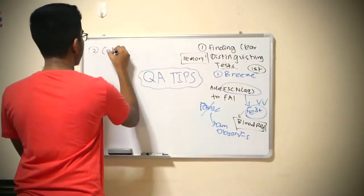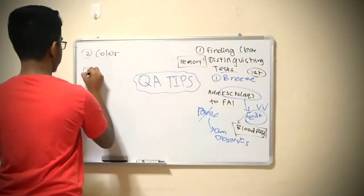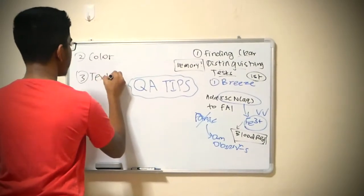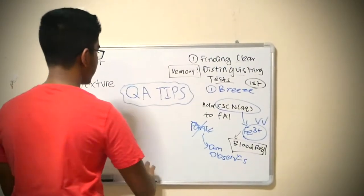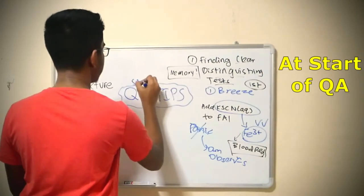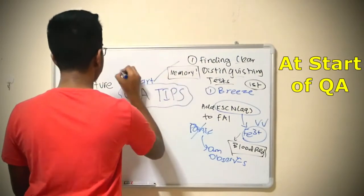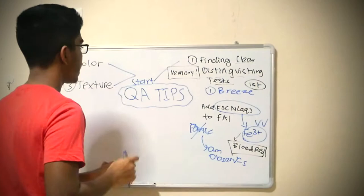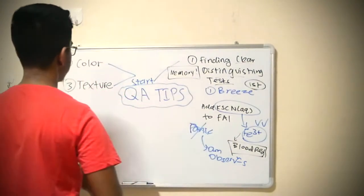It's color, and number three is texture. And by the way, these are the three things that you should take note at the start. At the start, you should take note of the color, texture, and the clear distinguishing test.